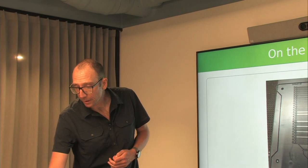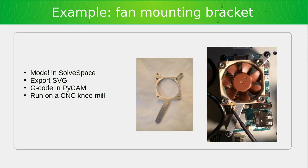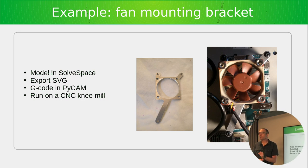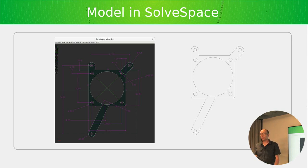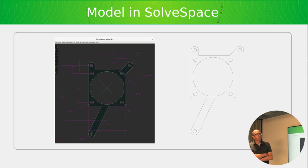My final demo is a metalworking project: a fan mount for holding a 40mm fan over the CPU of a small embedded ARM board — the board was quite capable but had terrible thermal control and would overheat constantly. This part was modeled in SolveSpace, the other major GUI CAD software in the free software space. This is a fully constrained sketch — every location is fully specified, leaving no room for the CAD software to make a different part than the one I had in mind.